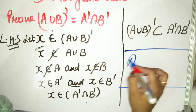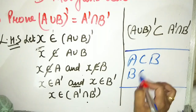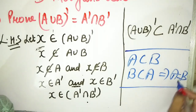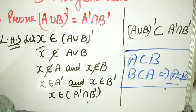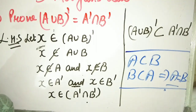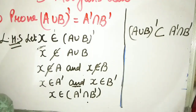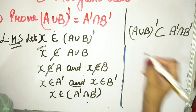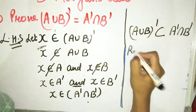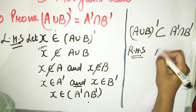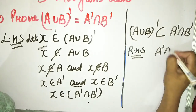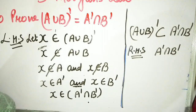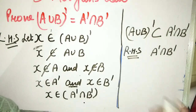Now we will prove it from the right hand side. The right hand side is A complement intersection B complement. Let y belong to A complement intersection B complement. By the definition of intersection, y belongs to A complement and y belongs to B complement.